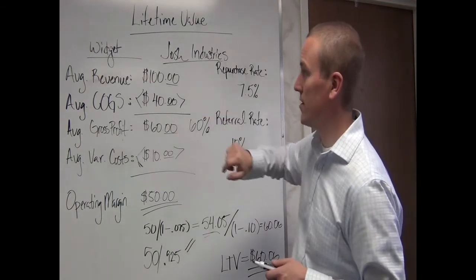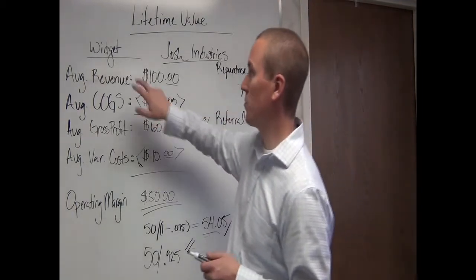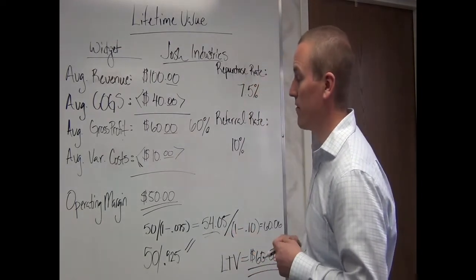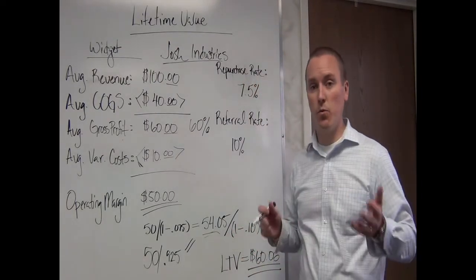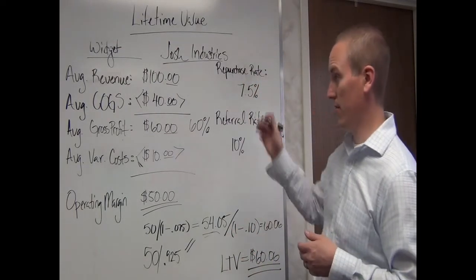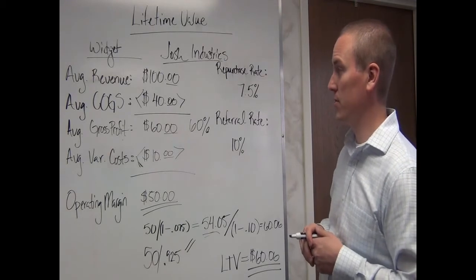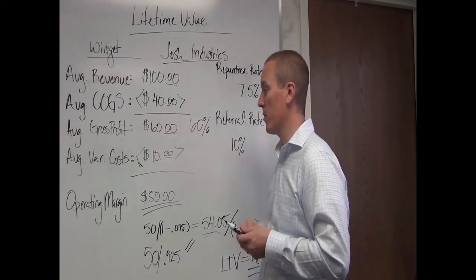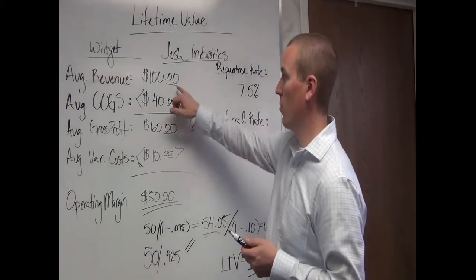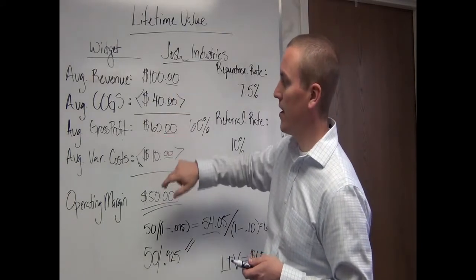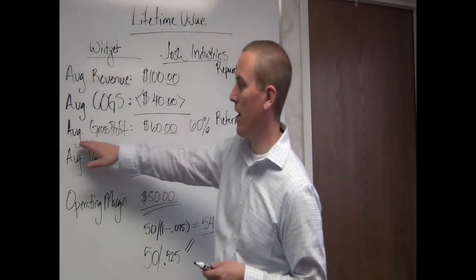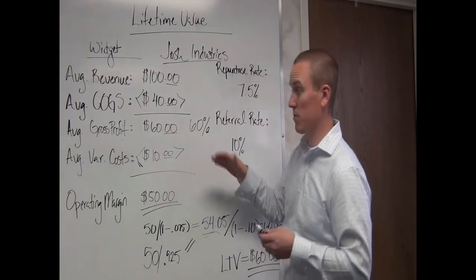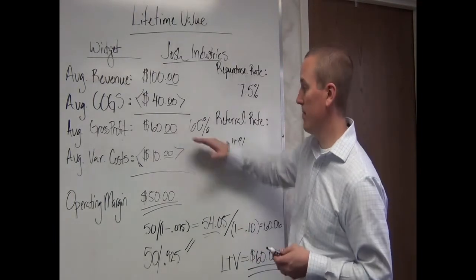I own Josh Industries. At Josh Industries we sell widgets, and the average revenue per transaction every time we sell a widget is $100. Our average cost of goods sold is $40. If I take $40 from $100, I get $60, and that gives me my average gross profit, meaning my gross profit margin is 60%.